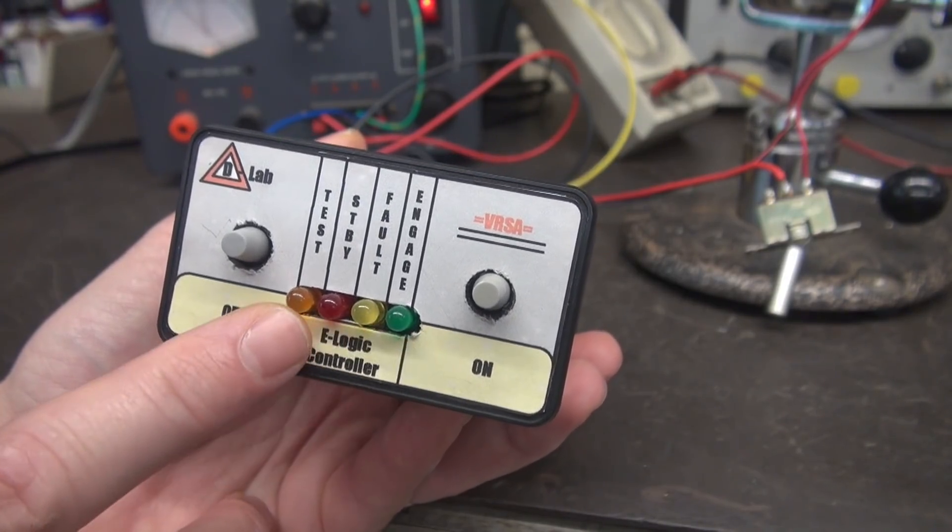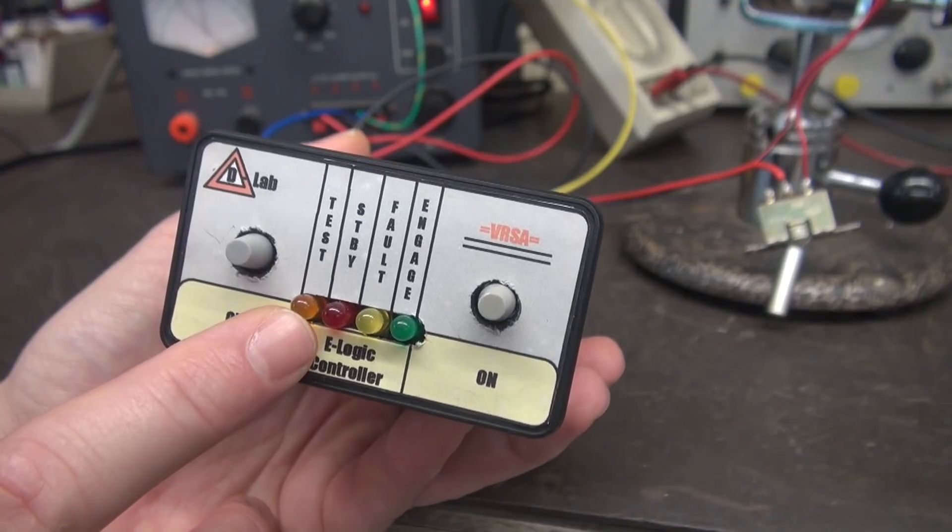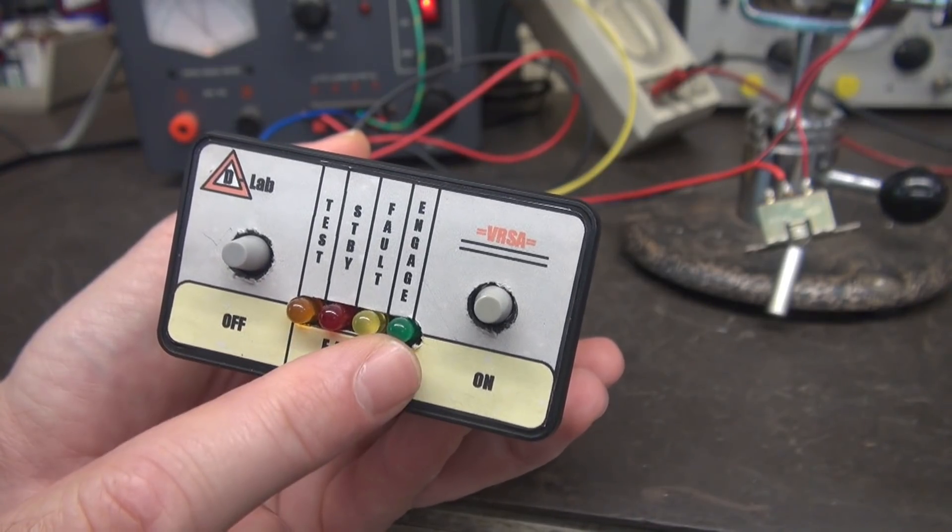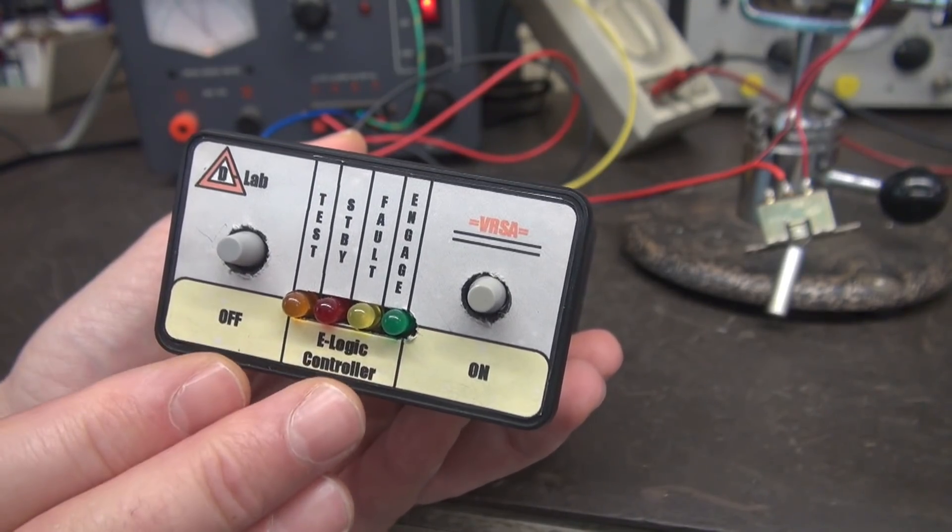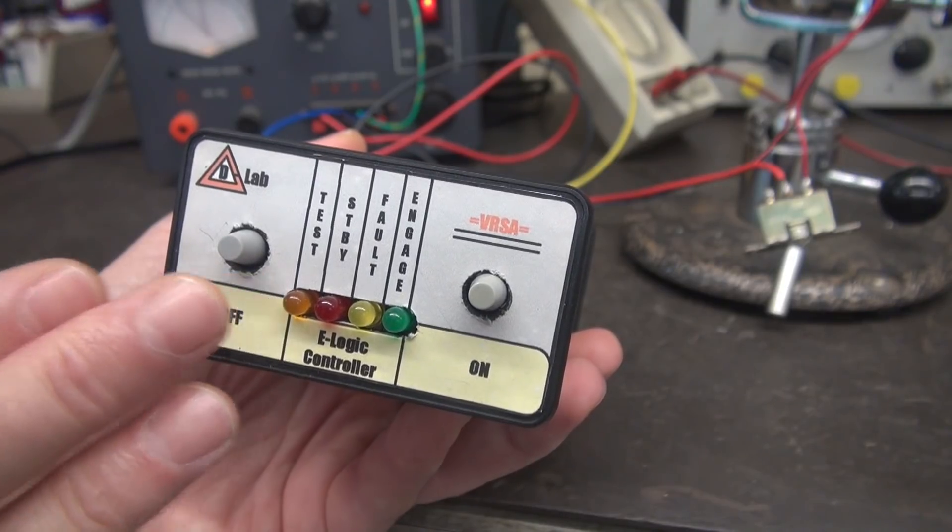Here are your status lights. You can see you have a test light, standby fault, and engage. I'll go into what those do when we hook it up to our item under test.